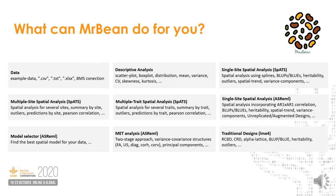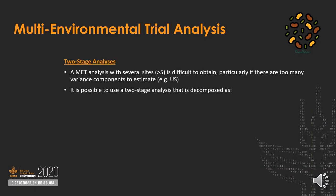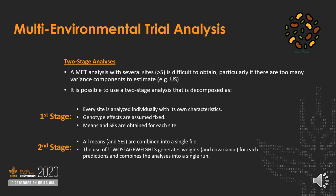For modeling multi-environmental trials, we have a two-stage approach, which means that in the first stage we analyze every single site separately, then save the means or predicted values and their standard errors. In the second stage, the analysis is weighted by the inverse of the variances of predicted values from the first stage.